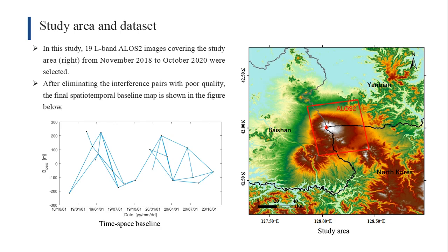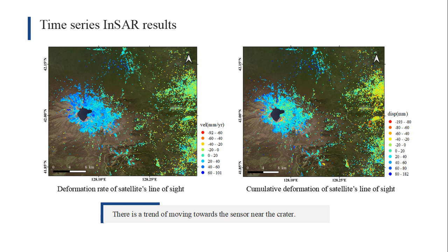In our study, 19 ALOS-2 PALSAR images collected from November 2018 to October 2020 are processed using the modified SBAS approach. The spatial coverage and baseline distributions are given in the figures below. Those two figures show the deformation velocity and cumulative deformations in the satellite's line of sight, respectively, where positive values indicate movement towards the sensor and negative values indicate movement away from the sensor.